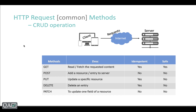PUT is idempotent. Say your location is India and you want to change it to USA. You make a PUT request: India to USA. If you make that same request a second time, the server just sets it to USA again — nothing materially changes. The state of the resource stays the same value. That's why PUT is idempotent.